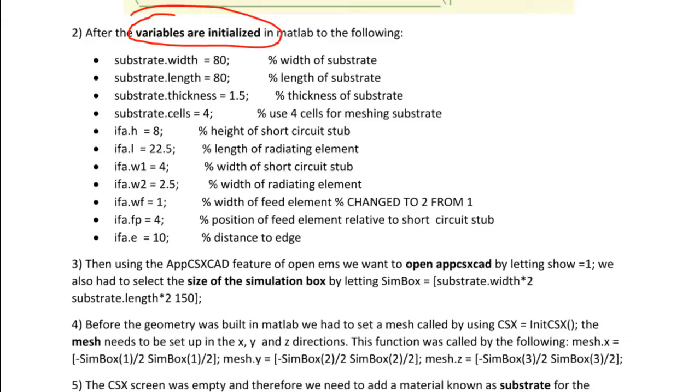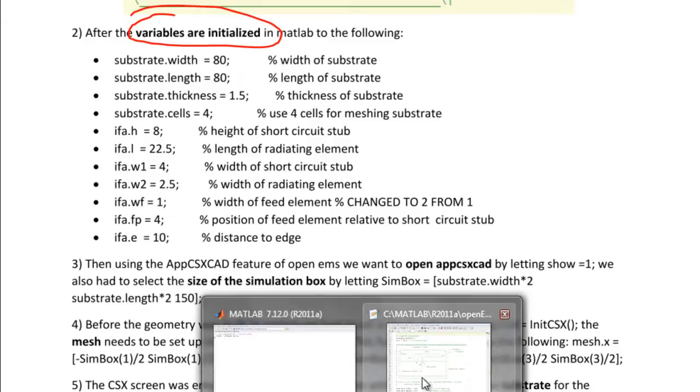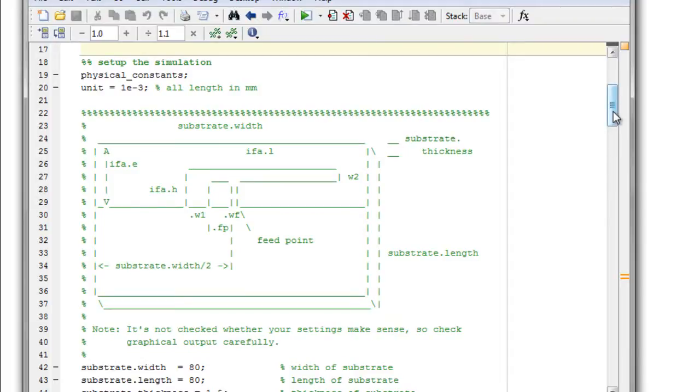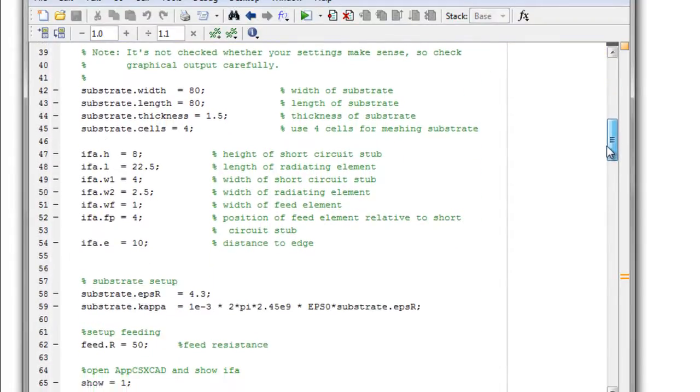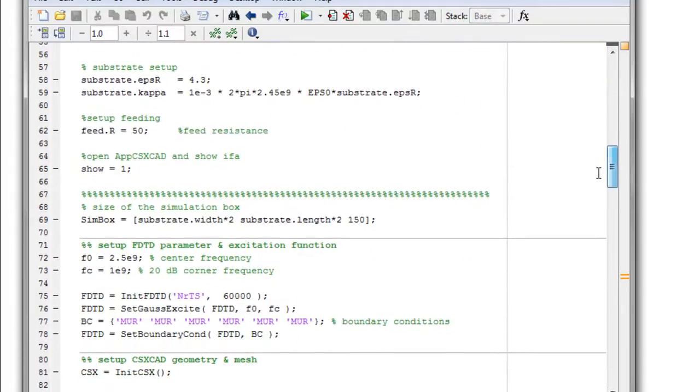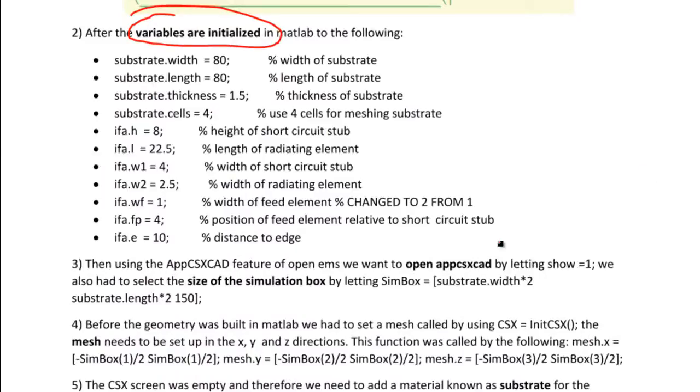So to do this we used the MATLAB software. In MATLAB you see I've opened up the screen, and there's a software called OpenCXS CAD. This is a feature of OpenEMS and this is done by activating the feature. First we open up the window, we set the size of the simulation box, and we let simbox substrate width be set as a parameter to show how big our simulation box will be.